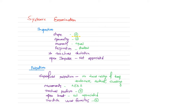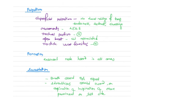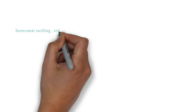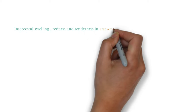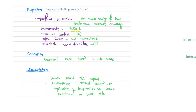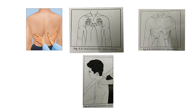Palpation: always start by saying inspectory findings are confirmed. In superficial palpation check for temperature, tenderness, redness, and swelling — in my patient none present. Your examiner can ask in which cases redness and tenderness can be seen: in emphysema and pleuritis, where the patient can have intercostal tenderness. Check movements — air entry bilaterally equal. Check posterior, upper anterior, lower anterior, and apical chest movements.